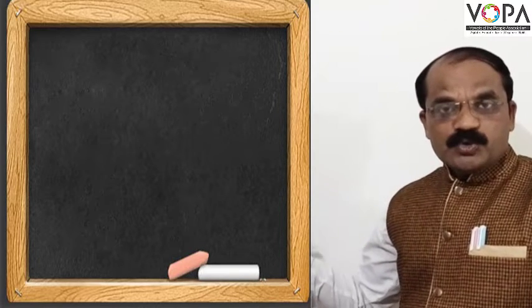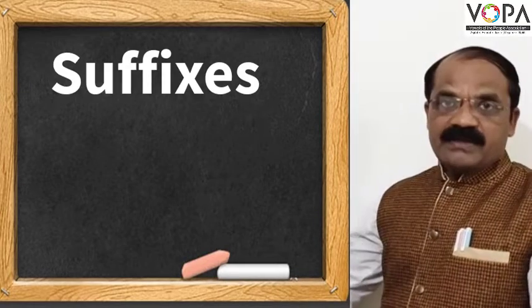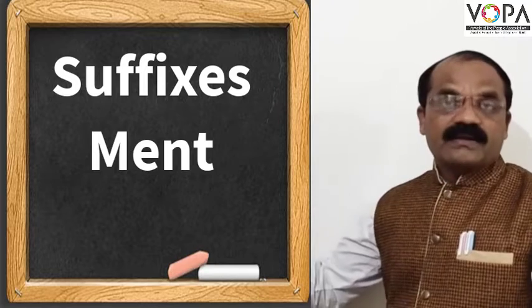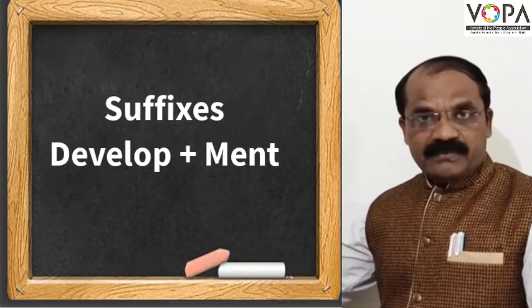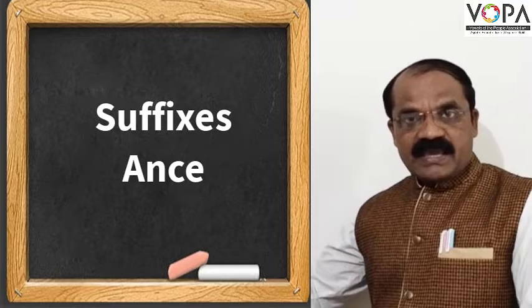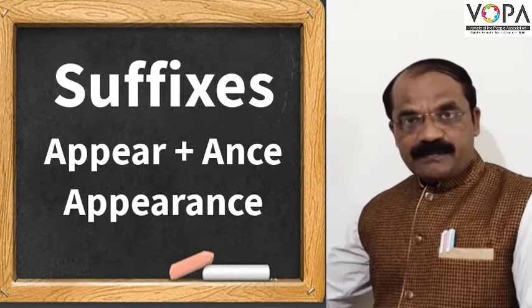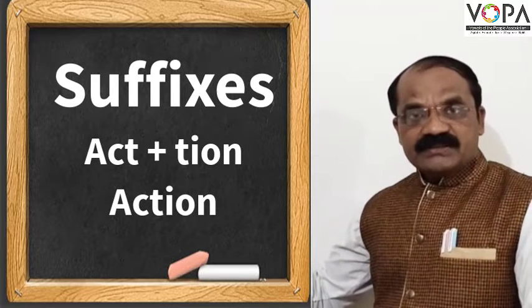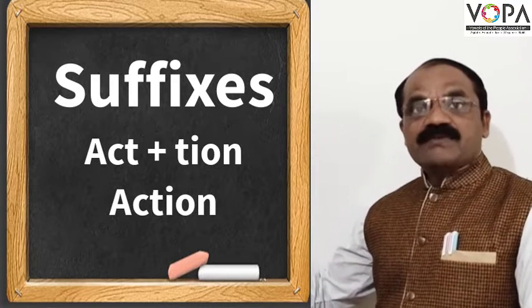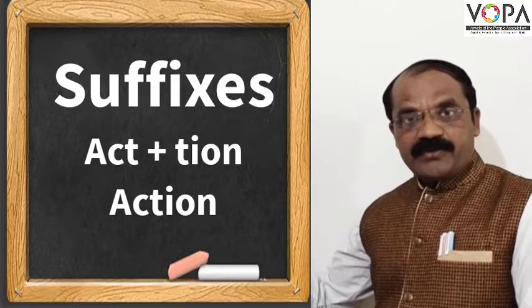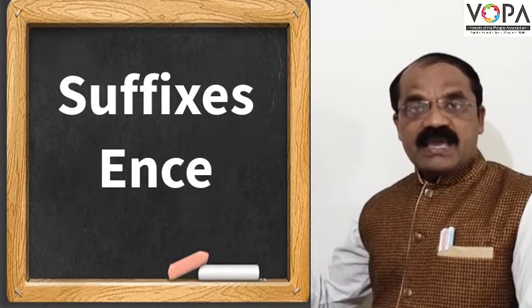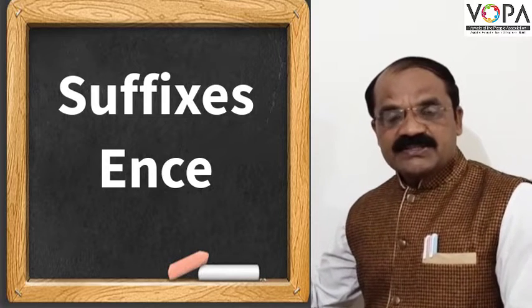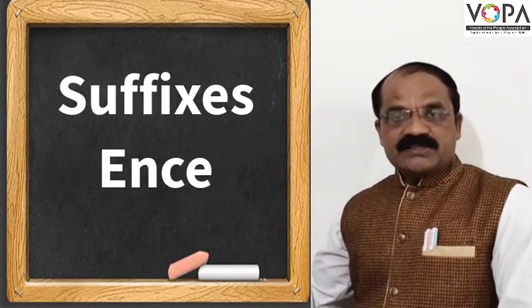How to make noun-forming suffixes is very simple. When we add the suffix '-ment' we get words like 'develop' becoming 'development.' Another suffix is '-ance,' as in 'appear' becoming 'appearance.' Then there is the suffix '-tion,' as in 'act' becoming 'action.' Another suffix is '-ence,' as in 'change' becoming 'changes.' These are the common noun-forming suffixes found on page number 72.